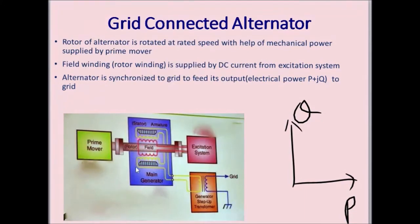If a fault happens inside the alternator, then that fault is fed by the alternator itself as well as by the grid. Therefore, this can damage the alternator, and hence the alternator must be isolated if there is a fault inside it.